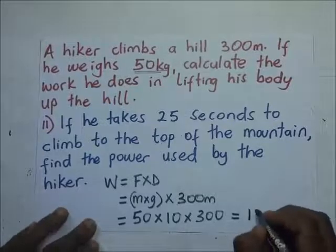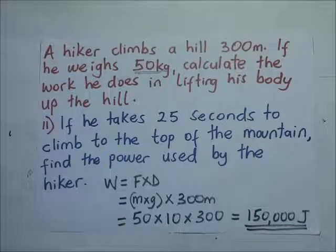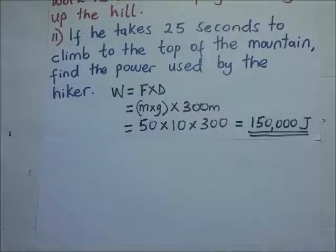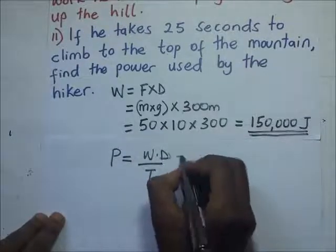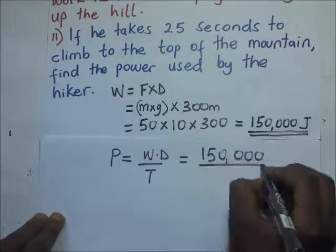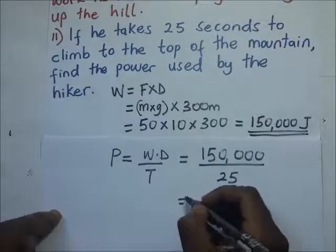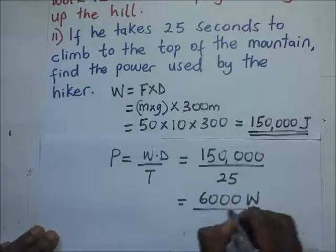The work done is 50 times 10 times 300, which equals 150,000 joules. Part two: if he takes 25 seconds to climb to the top, find the power used. Power equals work done over time taken — 150,000 joules divided by 25 seconds — which gives us 6,000 watts.